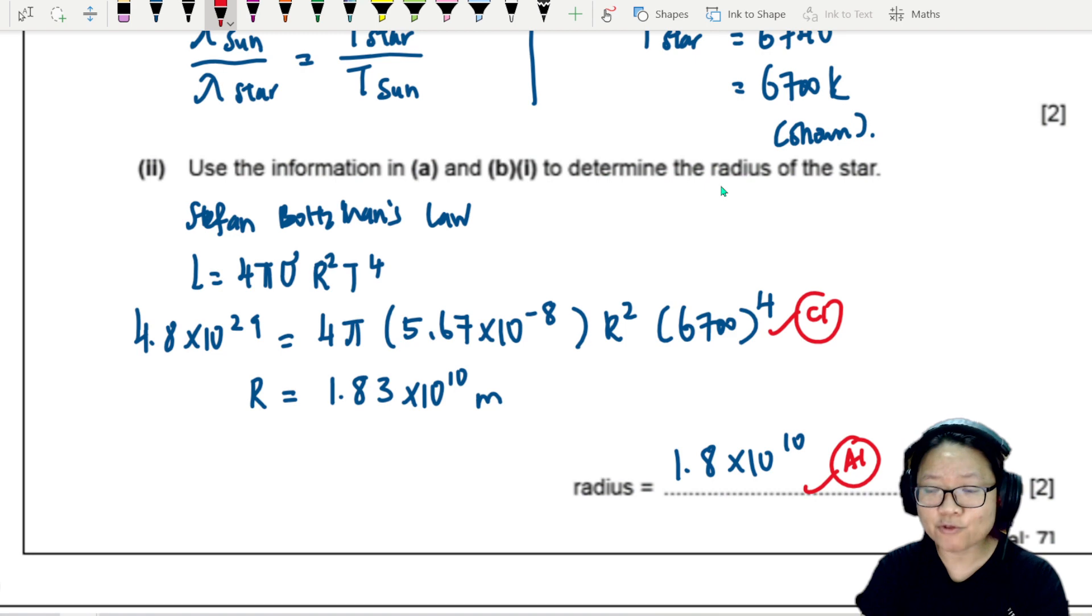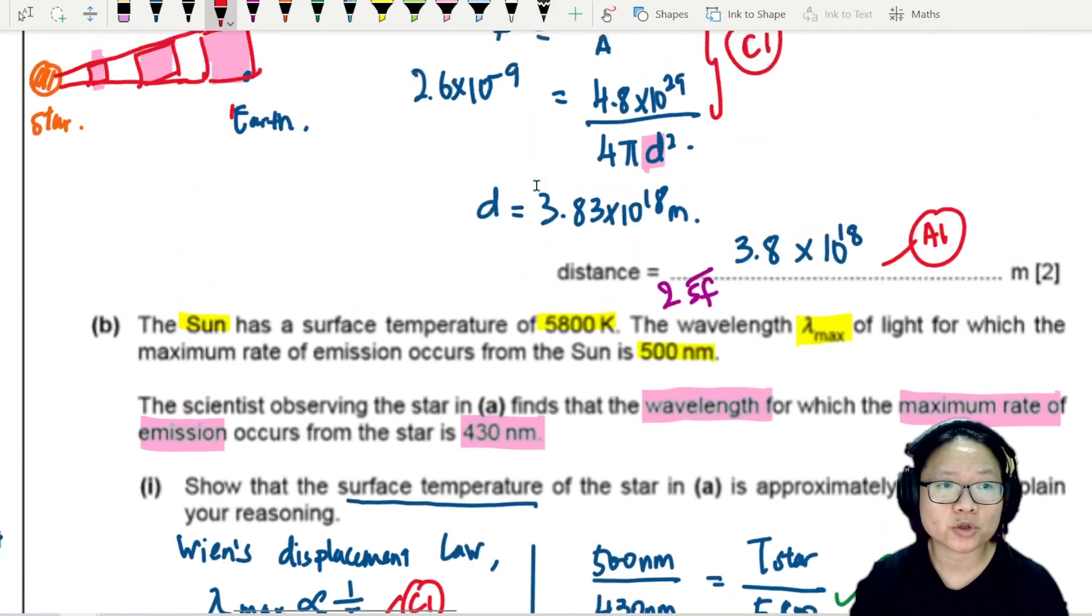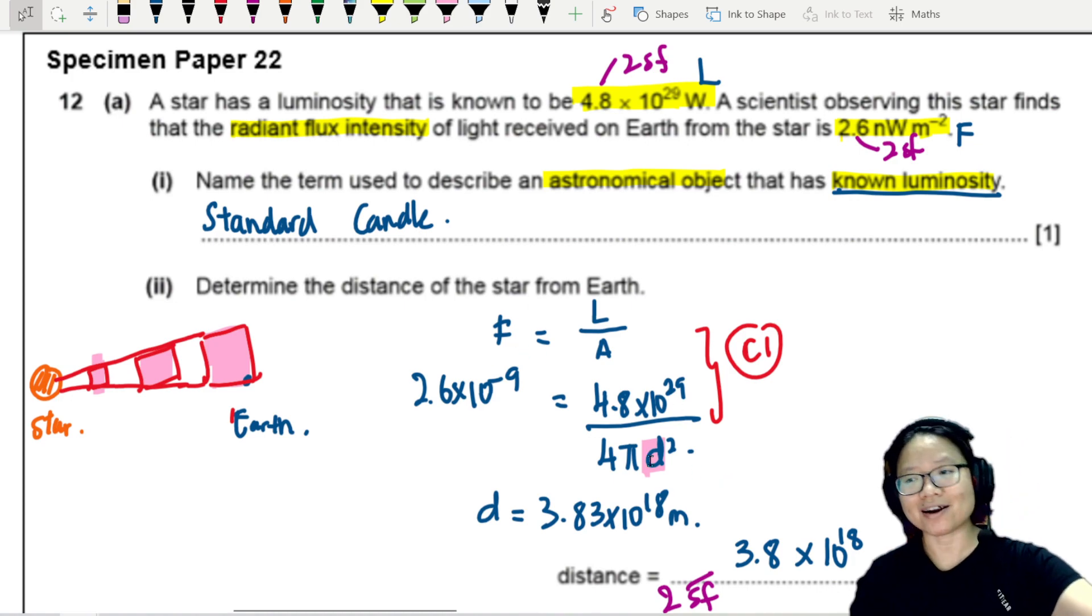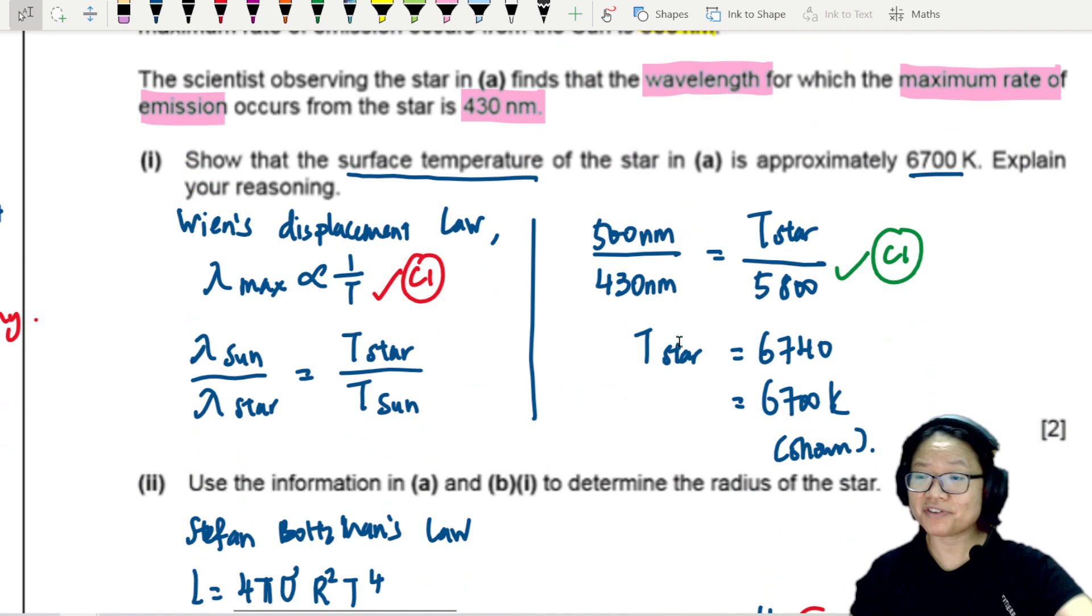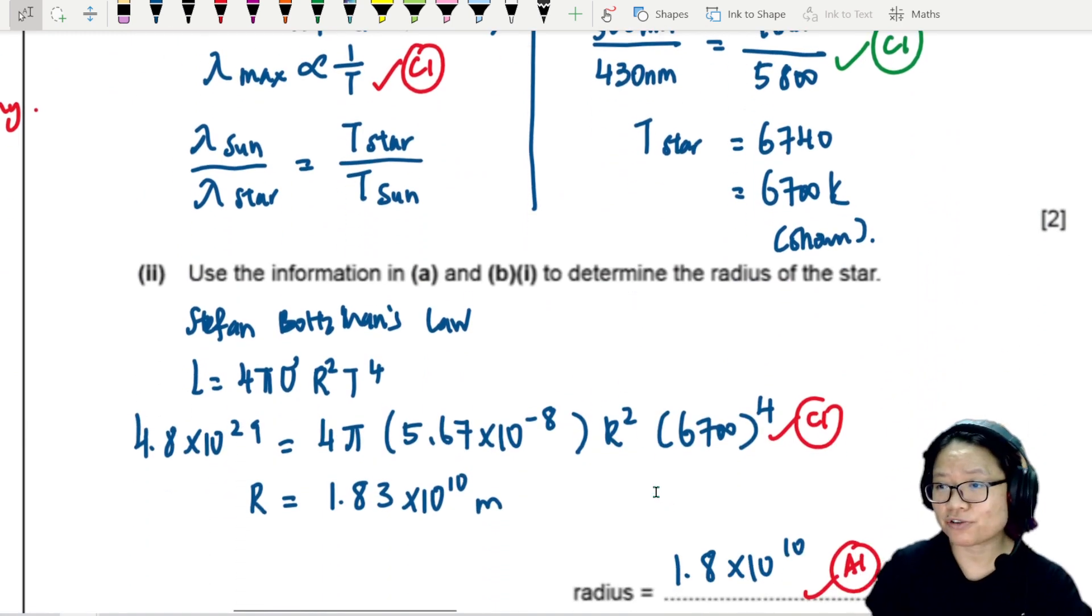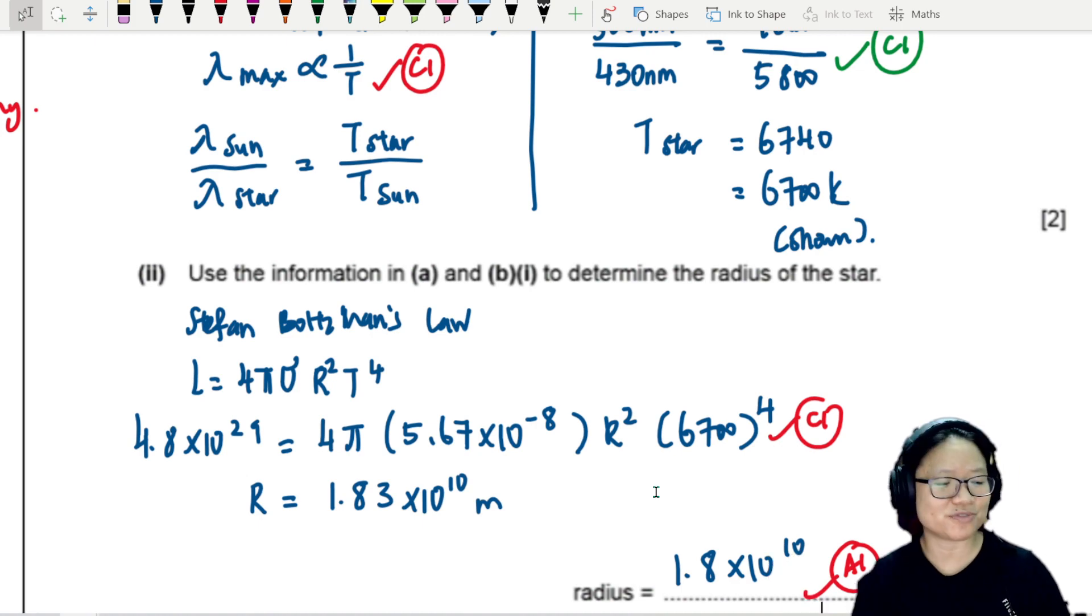That's it for this question, pretty straightforward. Remember, everything is linked in your study of astrophysics so far, from luminosity L to radiant flux intensity F to the distance of the star to the surface temperature, wavelength, and finally the radius of the star. If you haven't yet, pull out a piece of paper, write down the equations, and figure out how they are related to each other. I'll see you in the next video. Bye-bye!